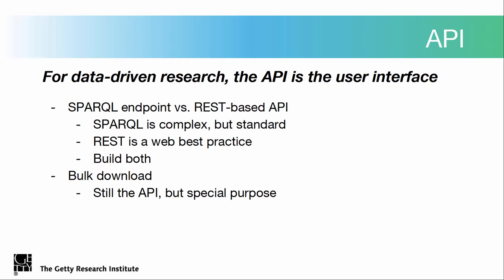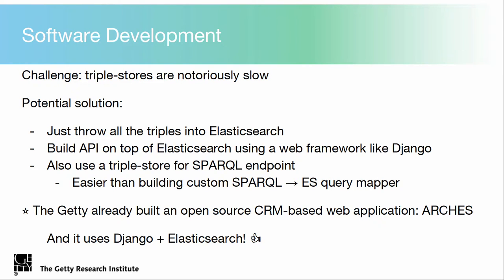The bulk download API is probably the easiest piece — we just put it out there. Going back to SPARQL endpoints and triple stores: triple stores have a reputation of being quite slow. One of the things I've been thinking about is putting everything into Elasticsearch, which is a very scalable search engine — you can dump a bunch of data in there and it is still very fast. I'll just build a REST API on top of that with a web framework like Django. We might also push data out to a triple store and SPARQL endpoint for people that actually want to access the data that way — that's easier than trying to map their complex queries into the Elasticsearch-based system.